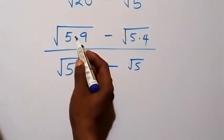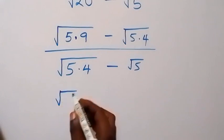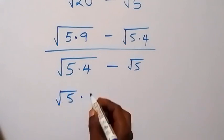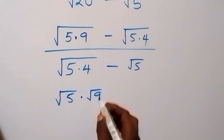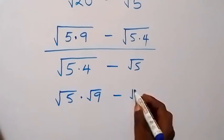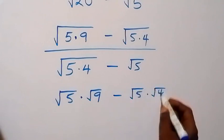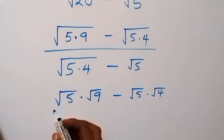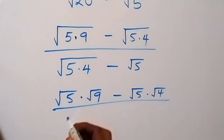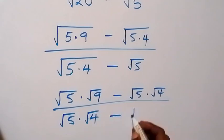The next step here we can separate this into two roots, and this will be root 5 times root 9, then minus root 5 times root 4, then divided by root 5 times root 4, then minus root 5.